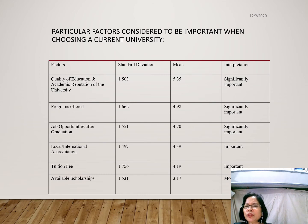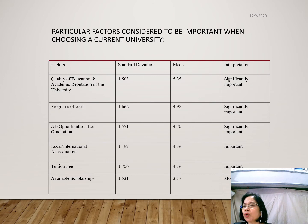Particular factors considered to be important when choosing a current university: the programs offered with a mean score of 4.98 and job opportunities after graduation with a mean score of 4.70 are significantly important in the choice of the current university, with the top factor having a mean score of 5.35.